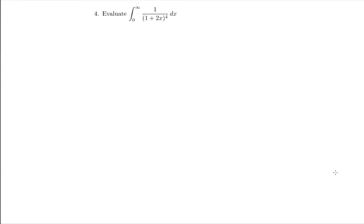Let's do a little bit more tricky improper integral. We have to calculate the integral from 0 to infinity of 1 over (1 plus 2x) to the power of 4 with respect to x. This is an improper integral because we have an infinity sign in one of the bounds of integration.